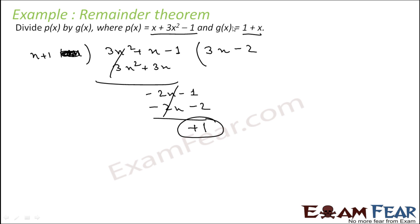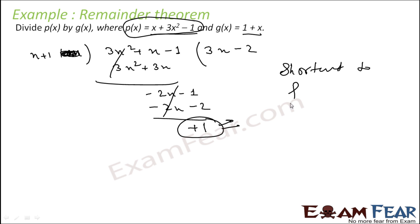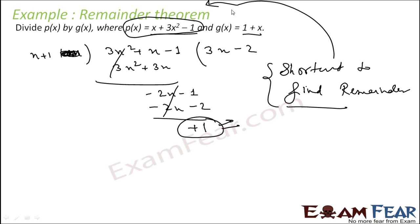But this is a complicated method to find the remainder — you have to actually divide. If the polynomial has terms like x to the power 8 or x to the power 7, it is even more difficult. So instead of doing the actual division to find the remainder, we will use a shortcut. That shortcut is called the remainder theorem.